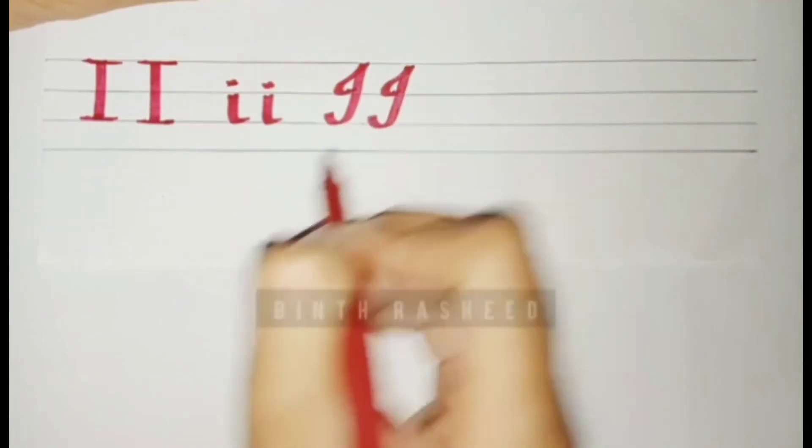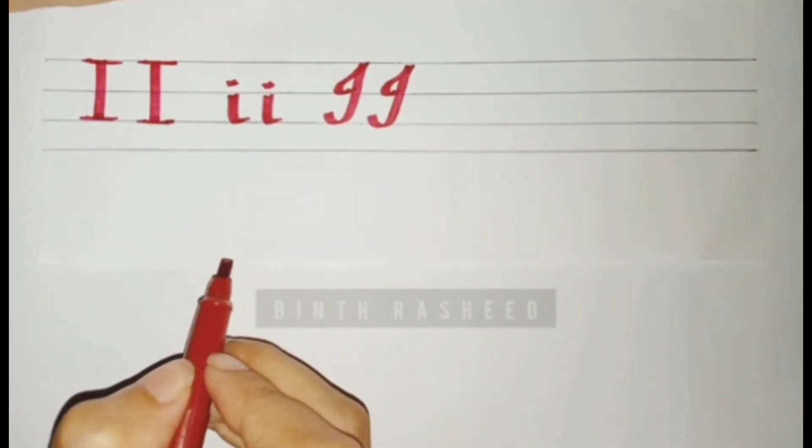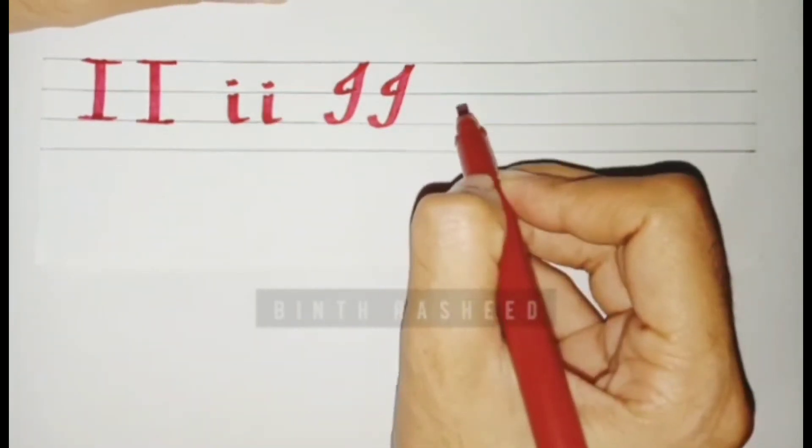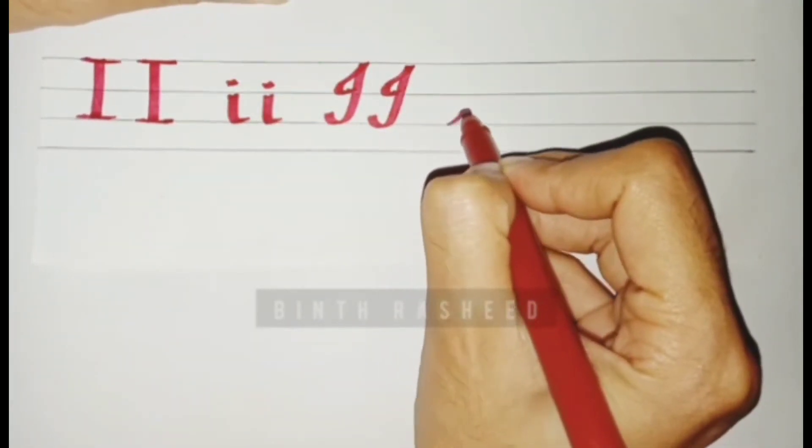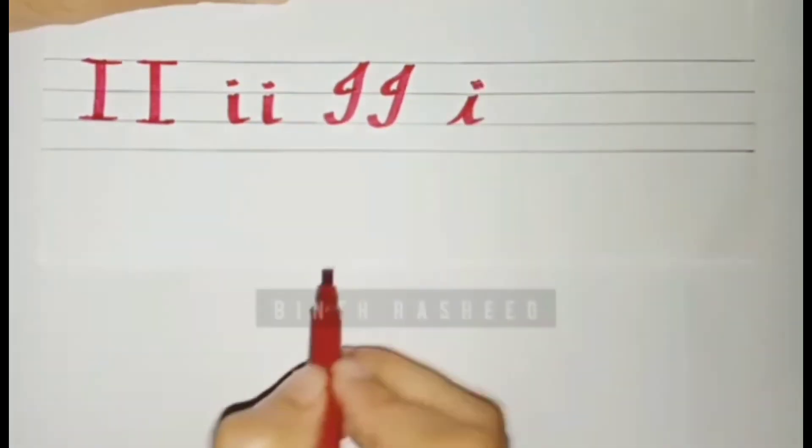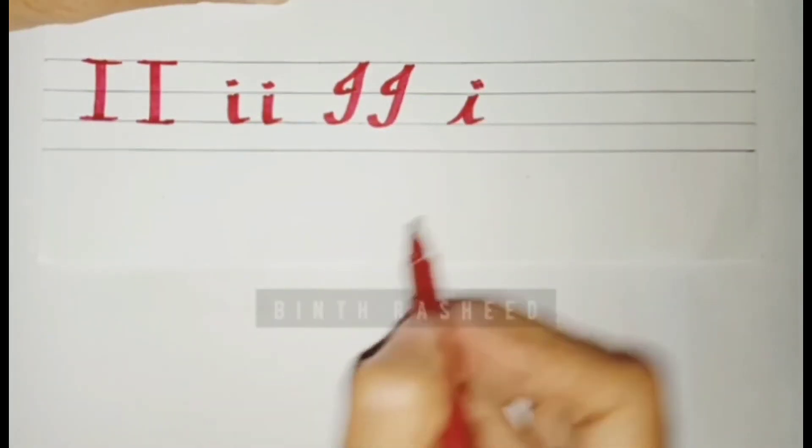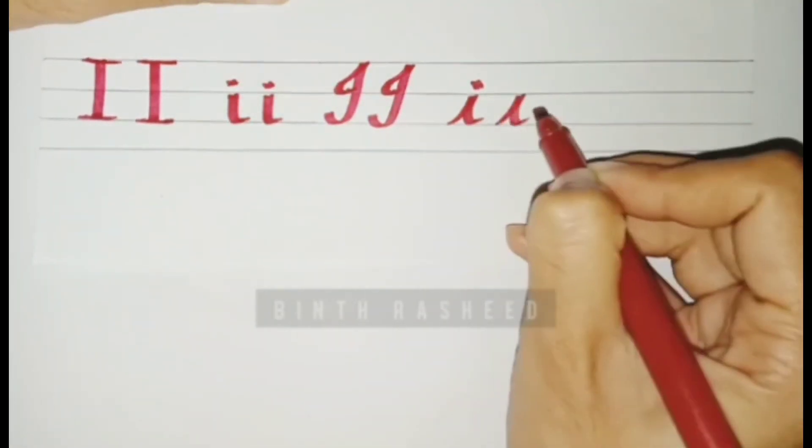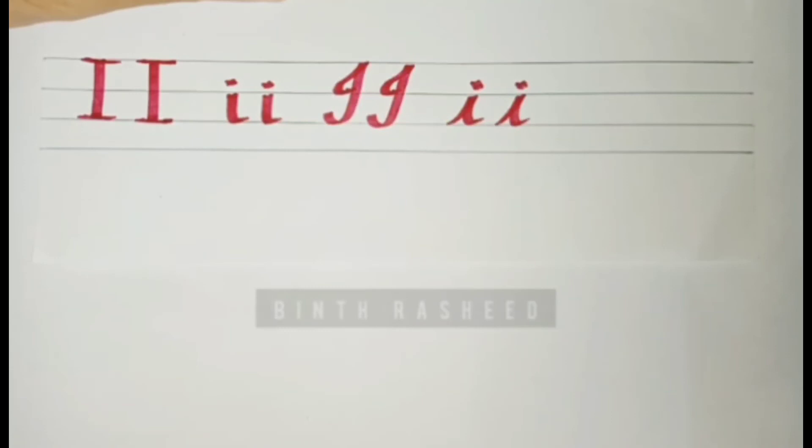Cursive small I: from the third move to the second, then come downwards ending in a curve with a dot at the top. Once more, from the third to the second, then to the bottom and a dot. So that is cursive small I.